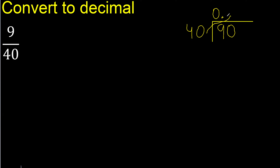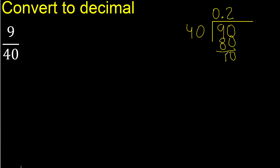Multiply 40 by which number is nearest to 90 but not greater. Multiply by 3 is greater; multiply by 2 is 80, which is not greater. Subtract: 10 remains. There is no number that goes down, therefore complete — always complete with 0 point only once.